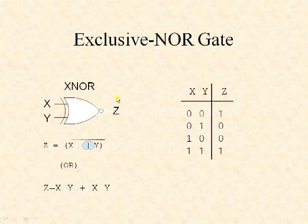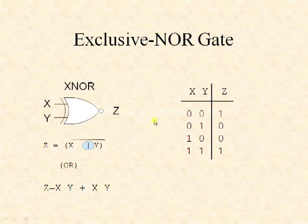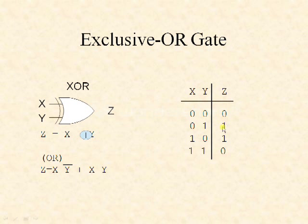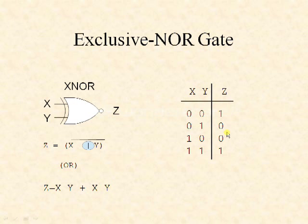Now let us see the exclusive NOR gate (XNOR). This is the symbol for the exclusive NOR gate; it accepts more than one input and provides one output. The bubble in the symbol indicates it performs the inverse operation of the XOR gate. The output expression is z equals x XOR y whole complement, or z equals x·y plus x bar·y bar. The truth table outputs are 1, 0, 0, 1 — replacing 0 with 1 and 1 with 0 compared to XOR.